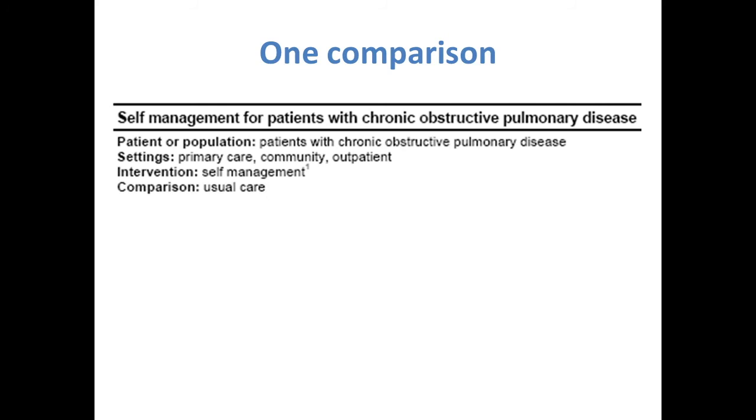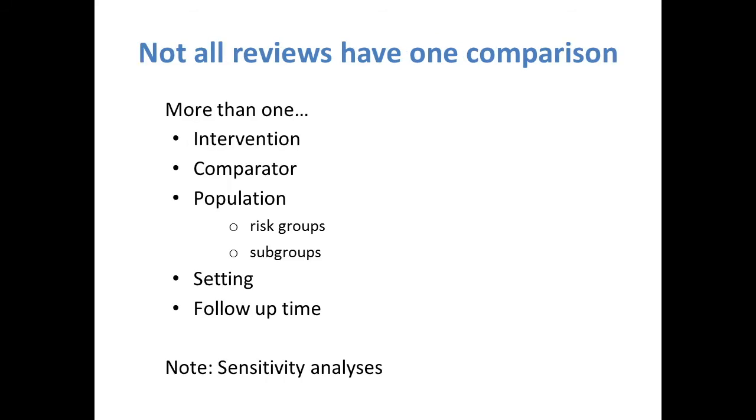The decision around what comparison to choose can sometimes be quite easy. For example, for this review, the intervention was self-management programs and it was compared to usual care in people with chronic obstructive pulmonary disease in an outpatient setting. However, some reviews will have multiple interventions, multiple comparator interventions, and be in multiple populations or settings. This can make it challenging to choose one comparison, and authors have tended to find it confusing.